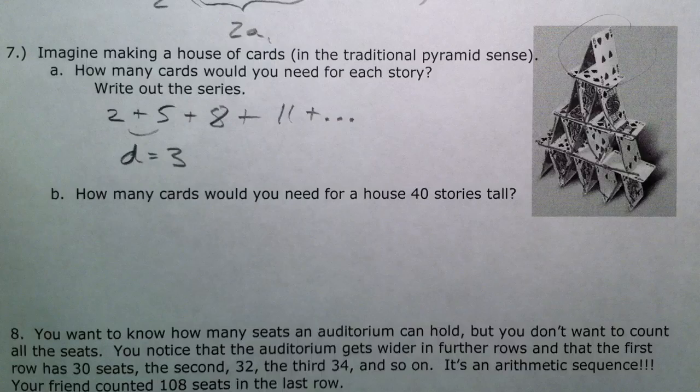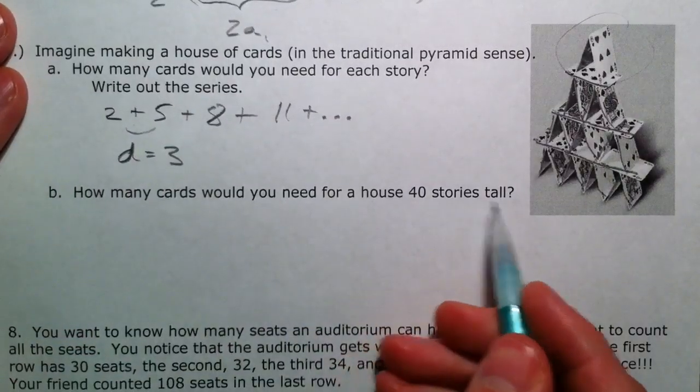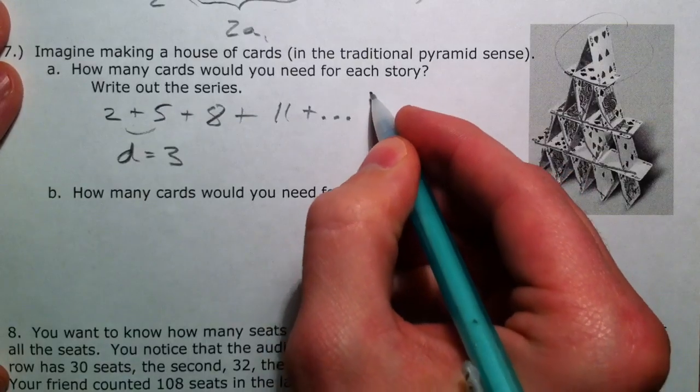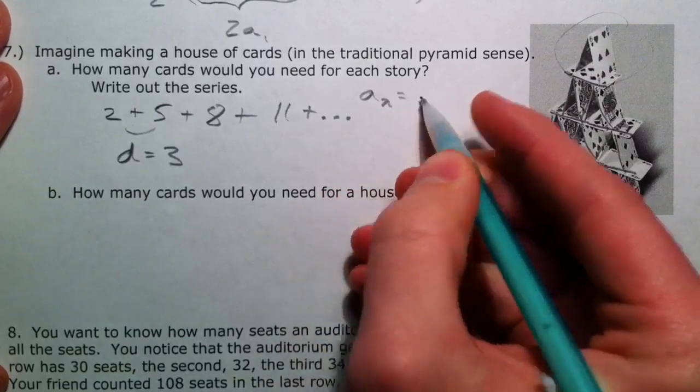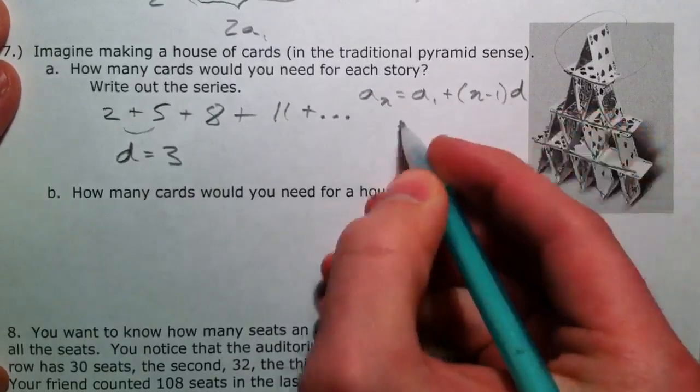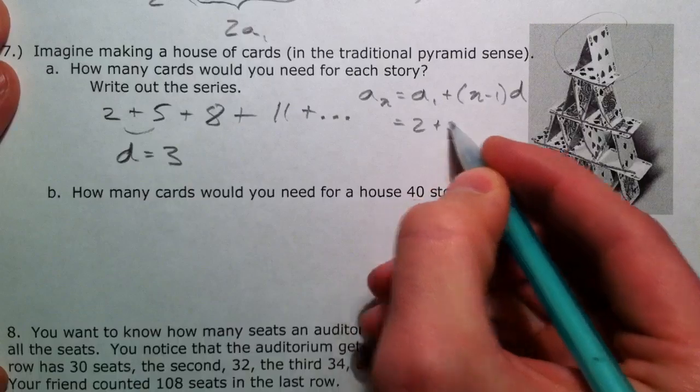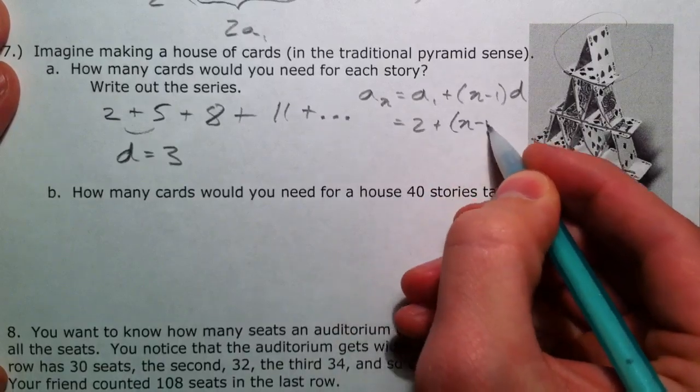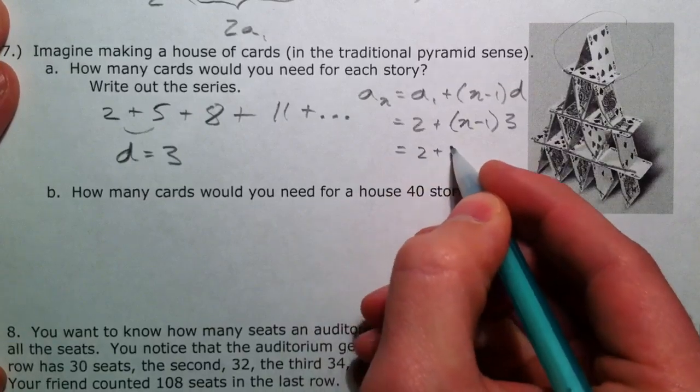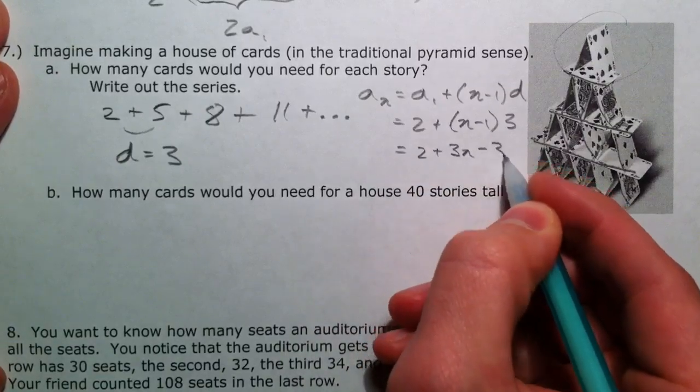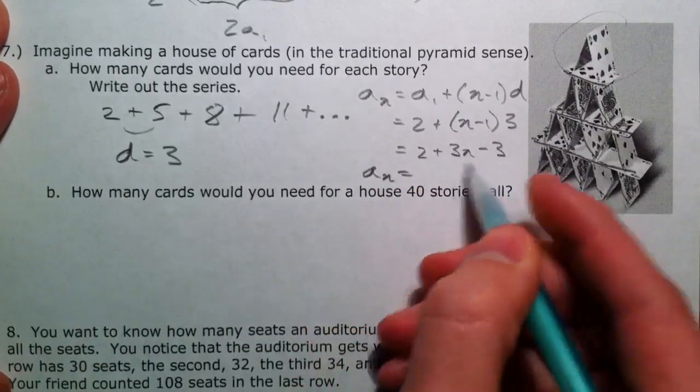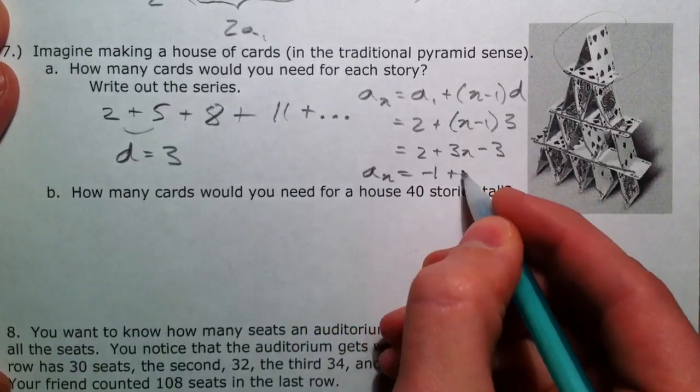So, how many cards would we need for 40 stories tall? Well, let's generate real quick our nth term just for good practice. A sub 1 plus n minus 1 times d. Our a sub 1 we know is 2. Our n is our variable. And our d is our plus 3 every single time. So, 2 plus 3n minus 3. And so, our nth term equation is negative 1 plus 3n.